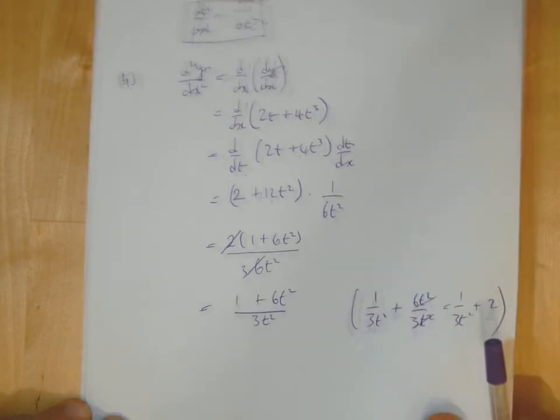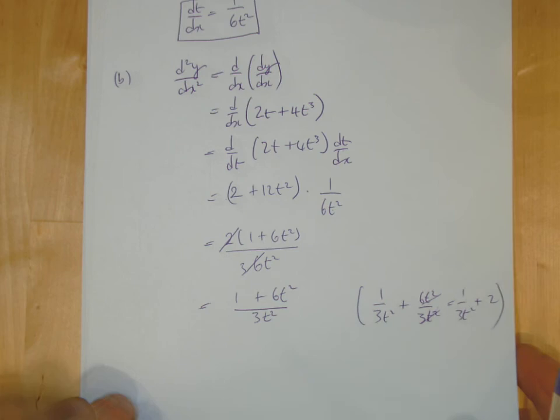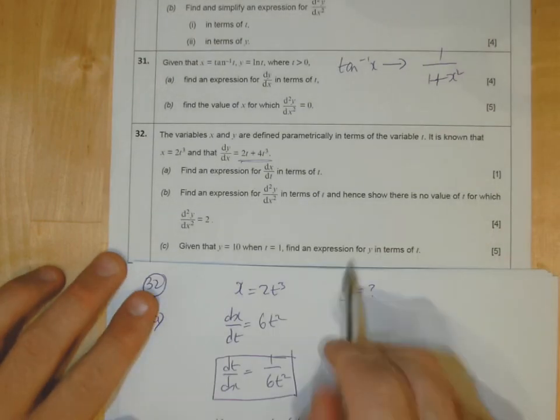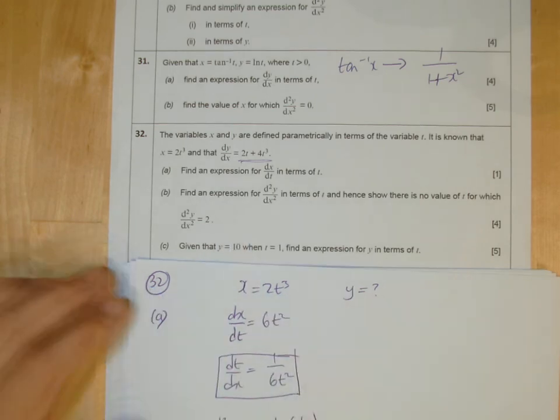We could leave it like that, or we could split it up. Because the whole thing's divided by this, you could write it as 1 over 3t squared plus 6t squared over 3t squared, which would give you 1 over 3t squared plus 2.